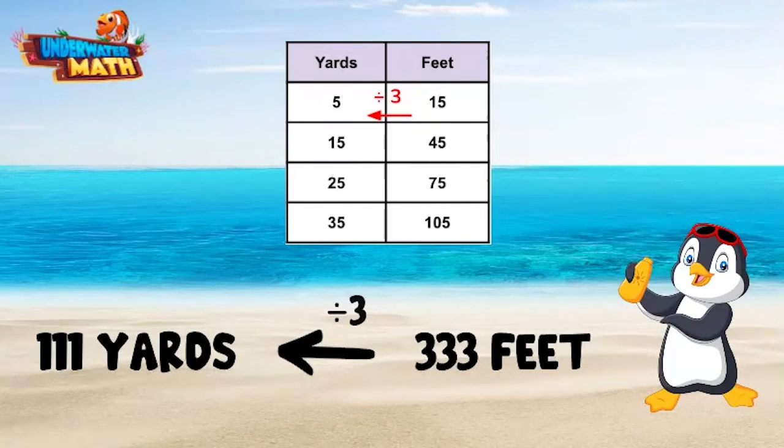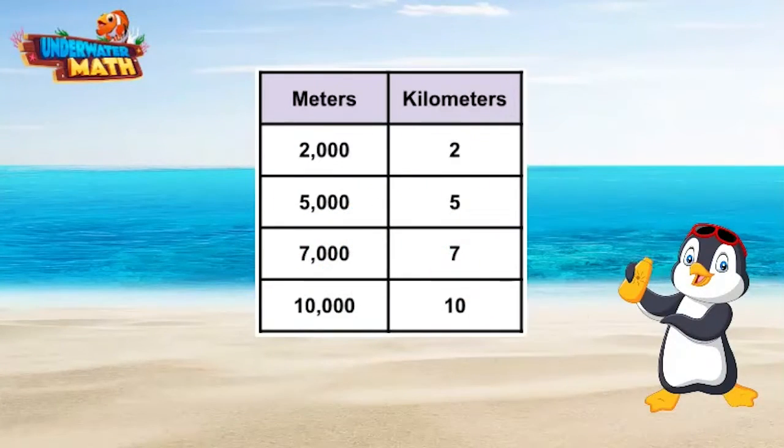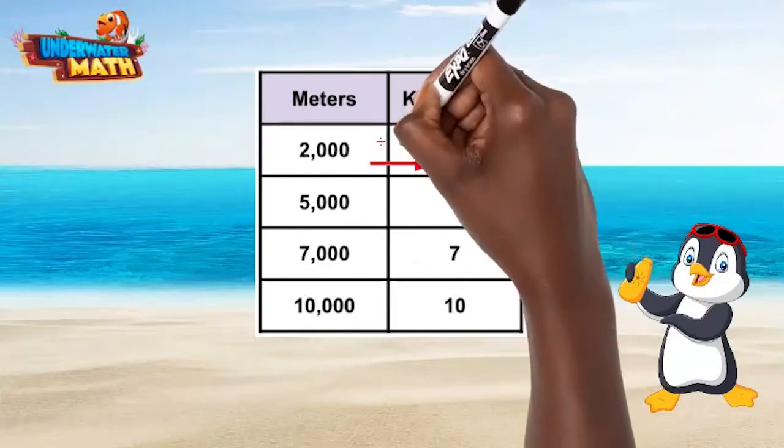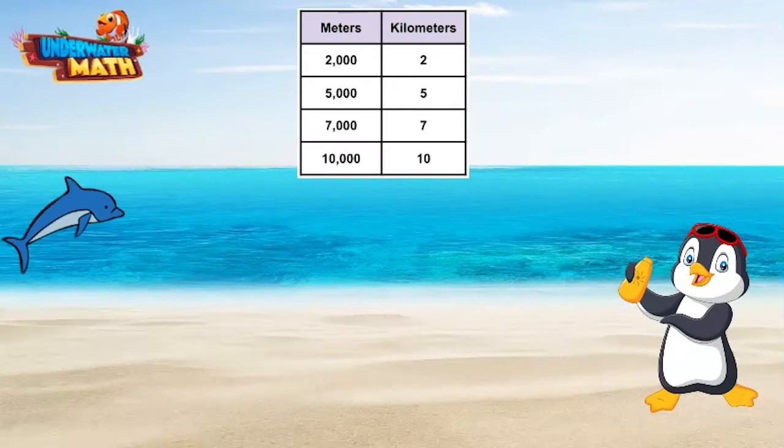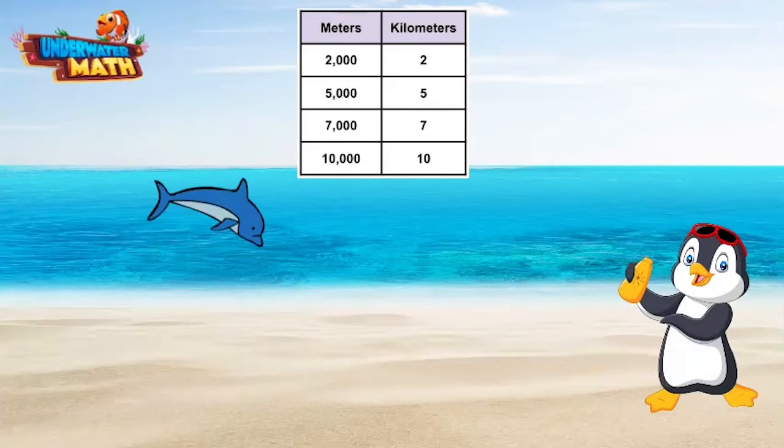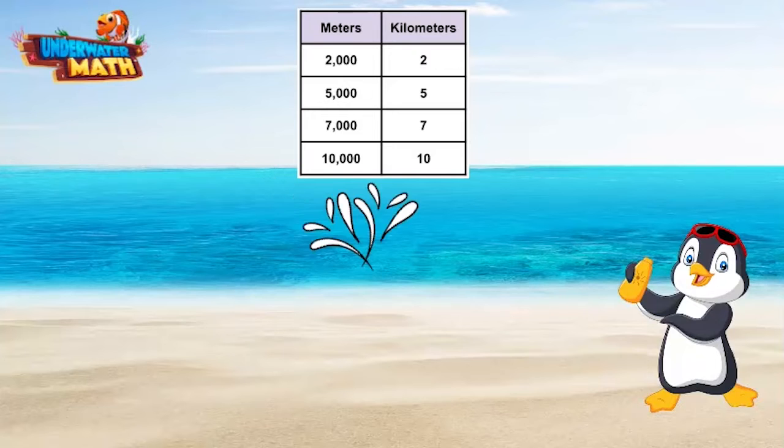This table shows the relationship between meters and kilometers. I noticed as you move from meters to kilometers, we divide by 1000. Daphne swam 13,000 meters. How many kilometers is that? Well, 13,000 divided by 1000 is 13. She swam 13 kilometers.